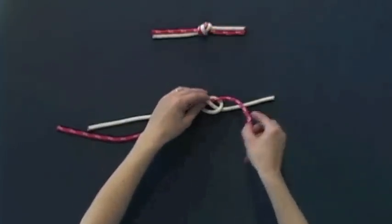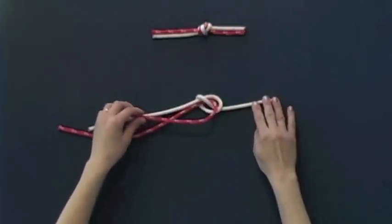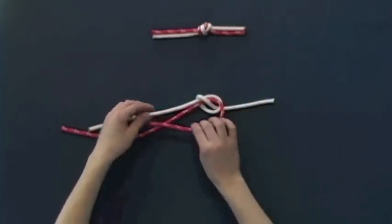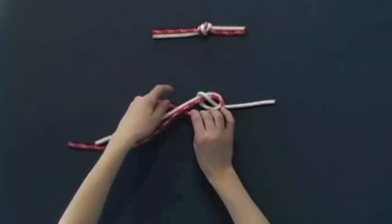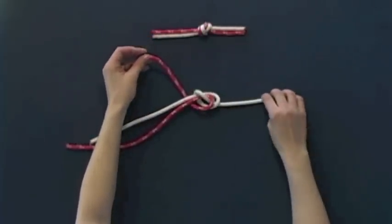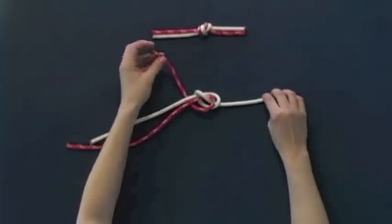Continue to follow the white piece of rope with the red piece through the knot.